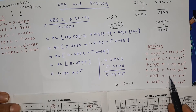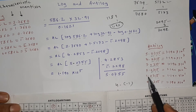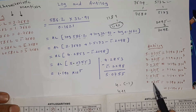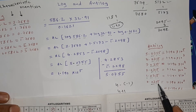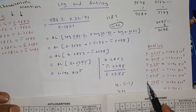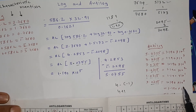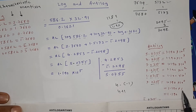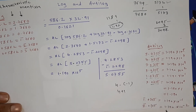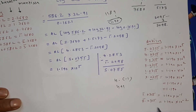For example, if the result were 1.0755, the anti-log digits after the decimal are still 0755, giving 1190, so you write 1.190 × 10¹. If the characteristic is 0, like 0.0755, then it is 1.190 × 10⁰ = 1.190 × 1 = 1.190.